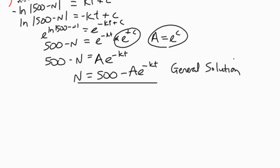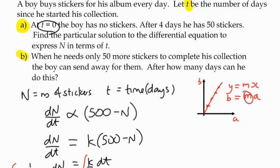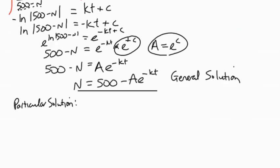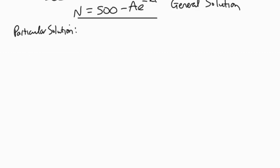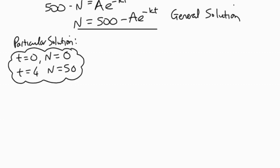So we can then go and find a particular solution because we're given some information. What we're told: on day zero, when time is zero, the boy has no stickers. So t equals zero, n equals zero. And after four days, he has 50 stickers. So we've got two pairs of information that we can use. We're saying that t equals zero, n equals zero, and t equals four, n equals 50. We can use that information to help us find some constants. We've got two constants here, constant a and constant k. That's why we need both of these pairs of information.